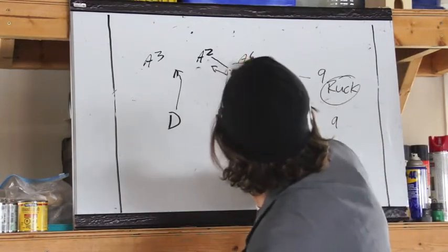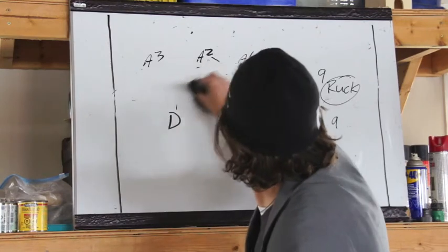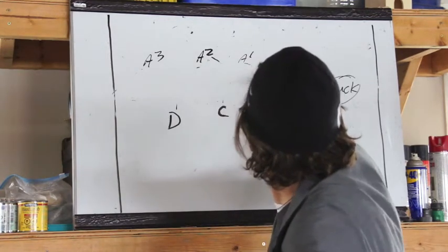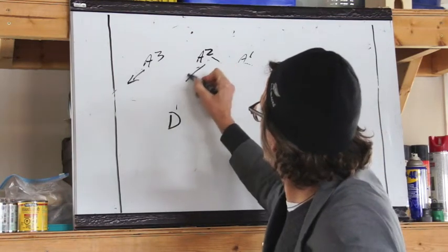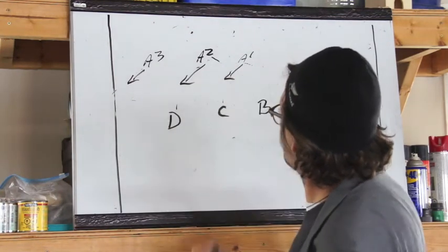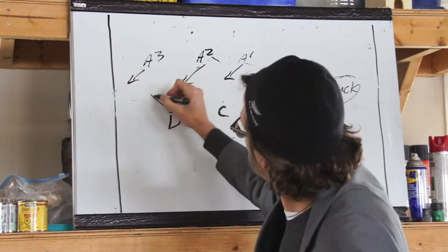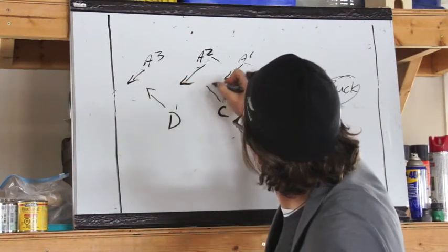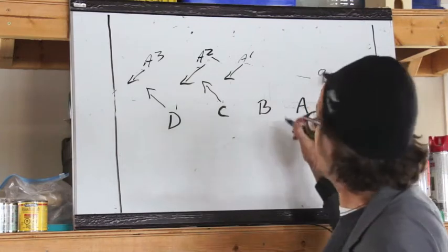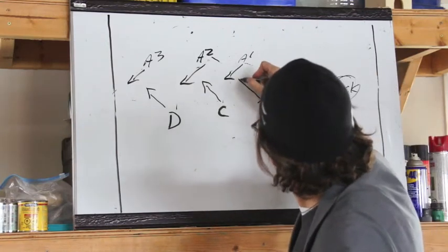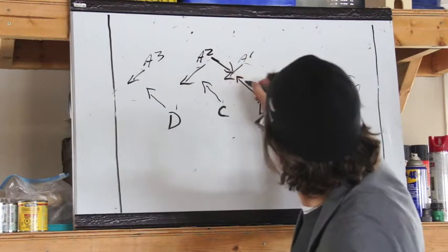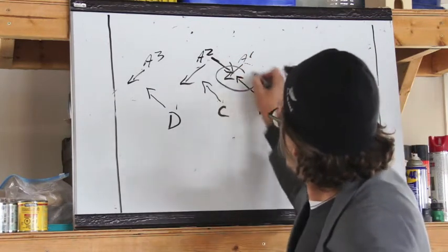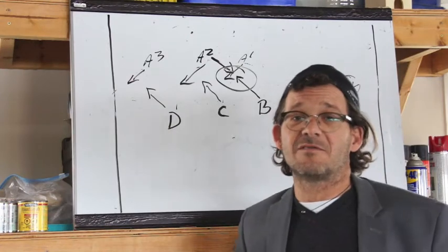So what we're doing with our defense, once again, is we're pushing them outside. We're trying to work them outside. And if they want to make that cutback against the grain of the attack, the inside man has an opportunity here to make what we call the domination tackle.